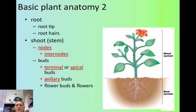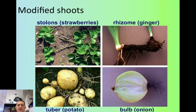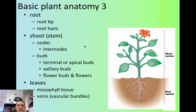Now let's talk about the shoot system, which is the part you actually see most of the time. You have what's called nodes or internodes, which are these small branches. Then you have buds, flower buds, and actual flowers. These are just pictures of some modified shoots: a tuber is a potato, a bulb is an onion, a rhizome is a ginger, and then strawberries are the traditional plants that grow off vines, kind of like tomatoes.